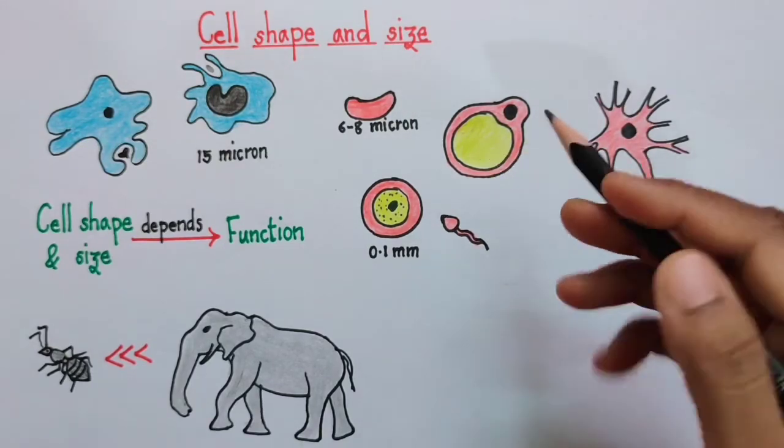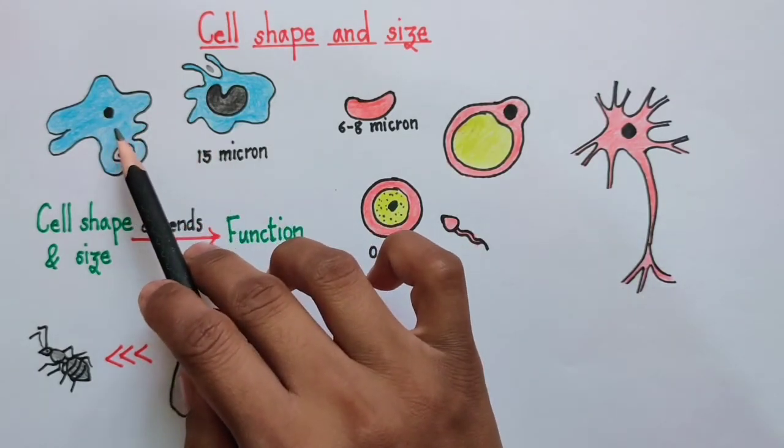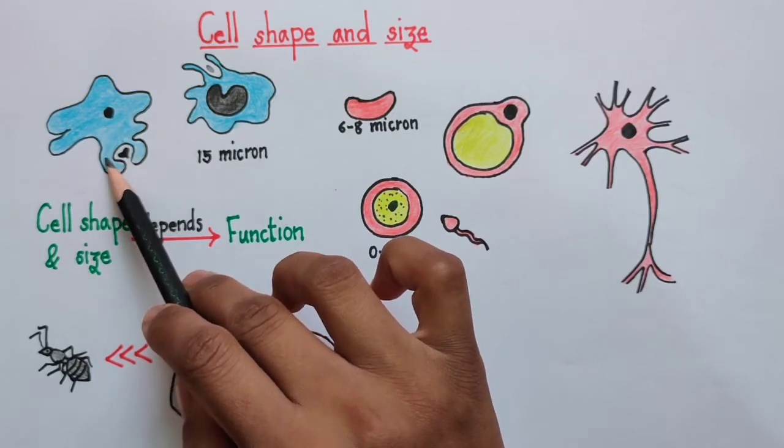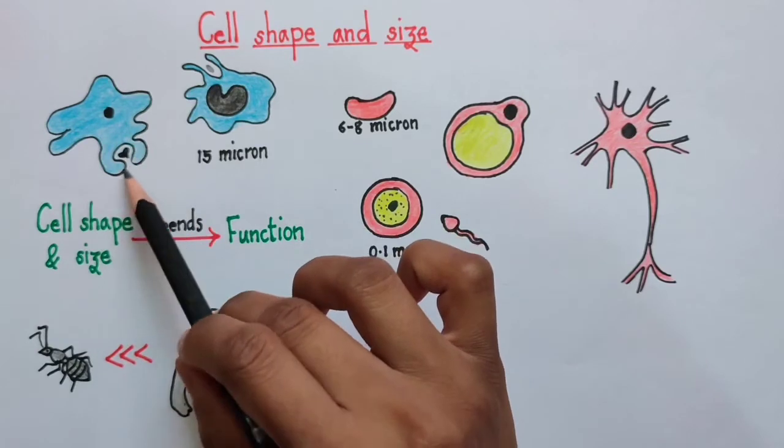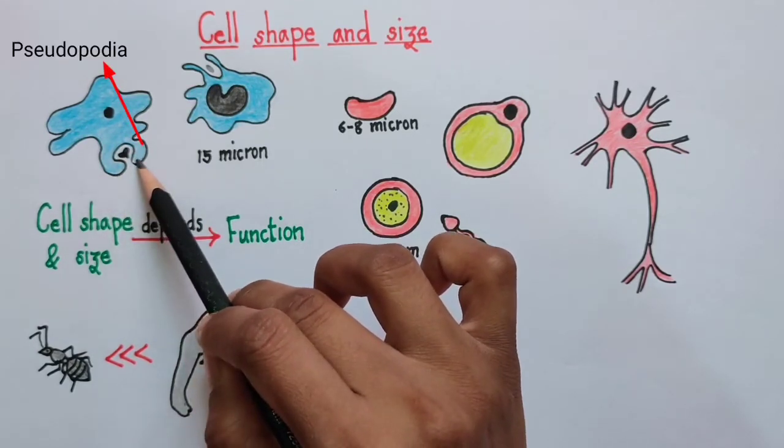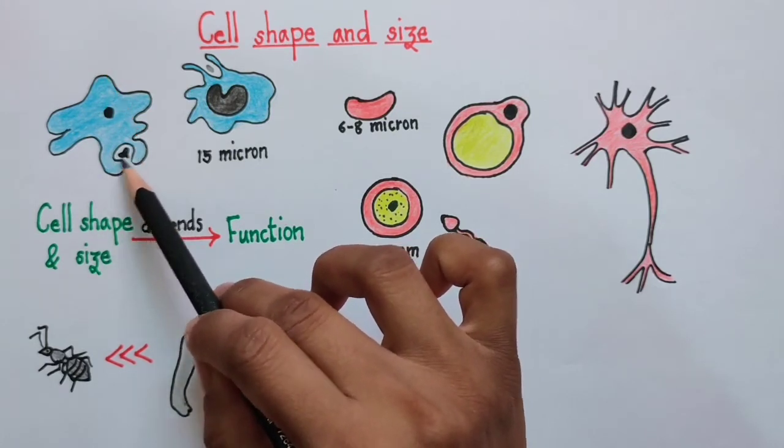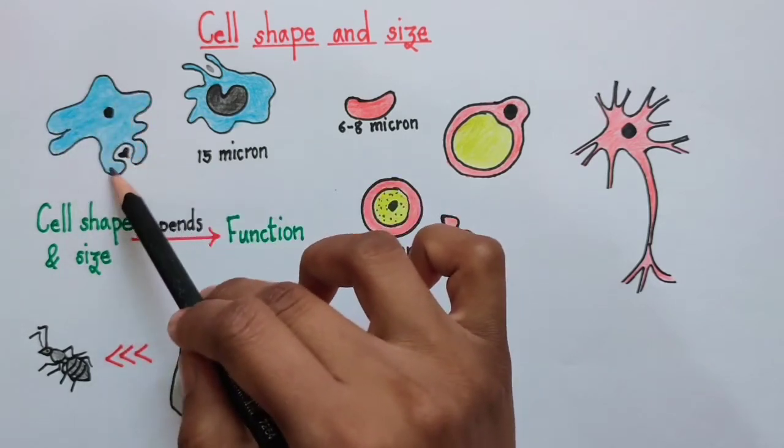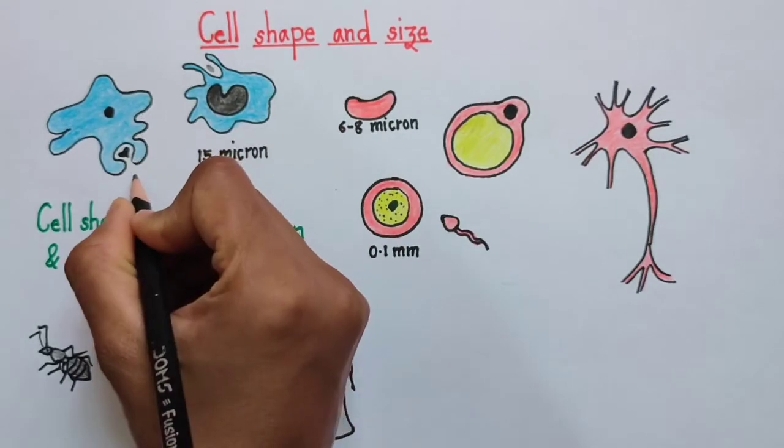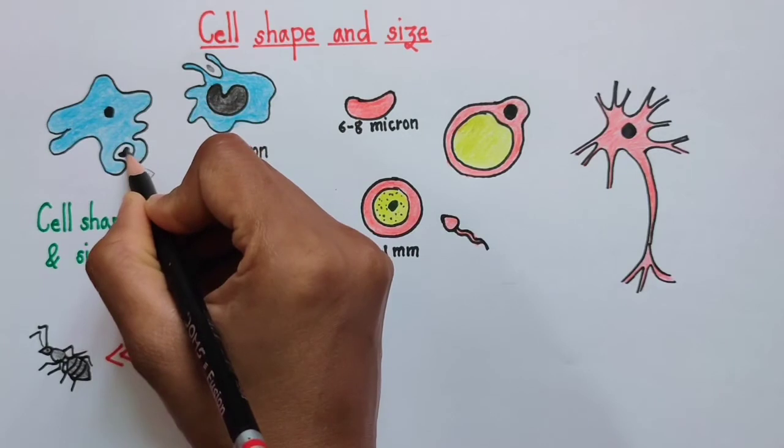Now let us try to understand what is the reason behind this. If you consider this amoeba, we know that it is a shapeless creature. It keeps changing its shape by the formation of what we call pseudopodia or false foot. And this ability of changing the shape allows the amoeba to move from one place to another. So it helps in the movement of amoeba. At the same time, it allows it to capture the food.